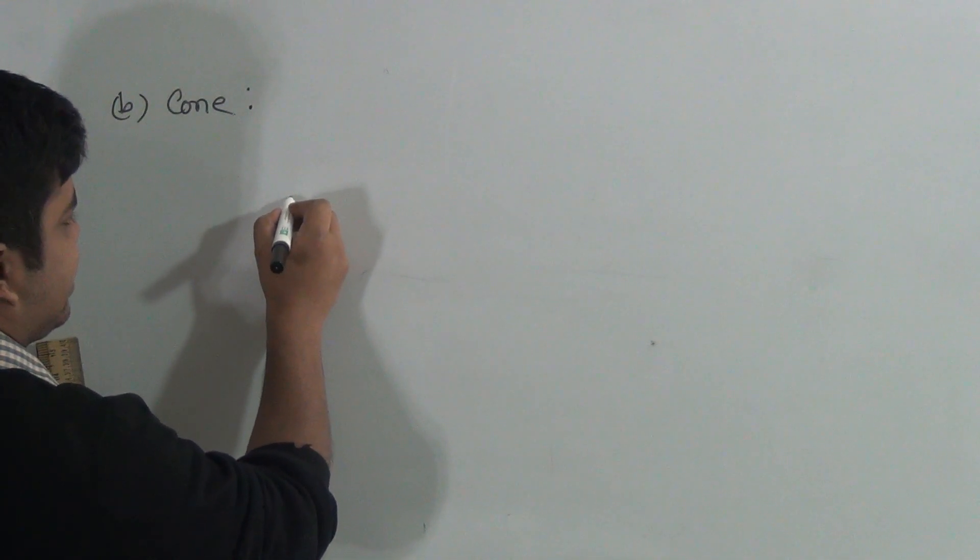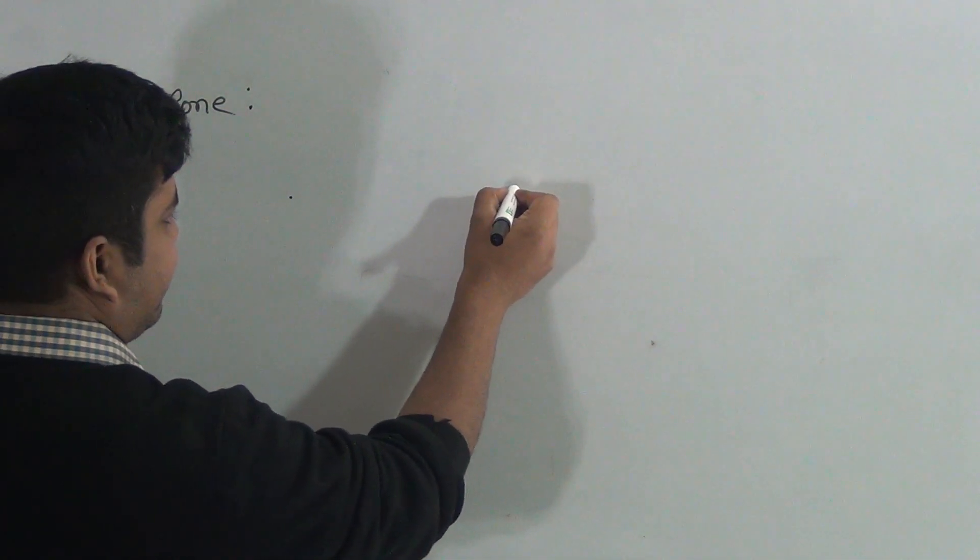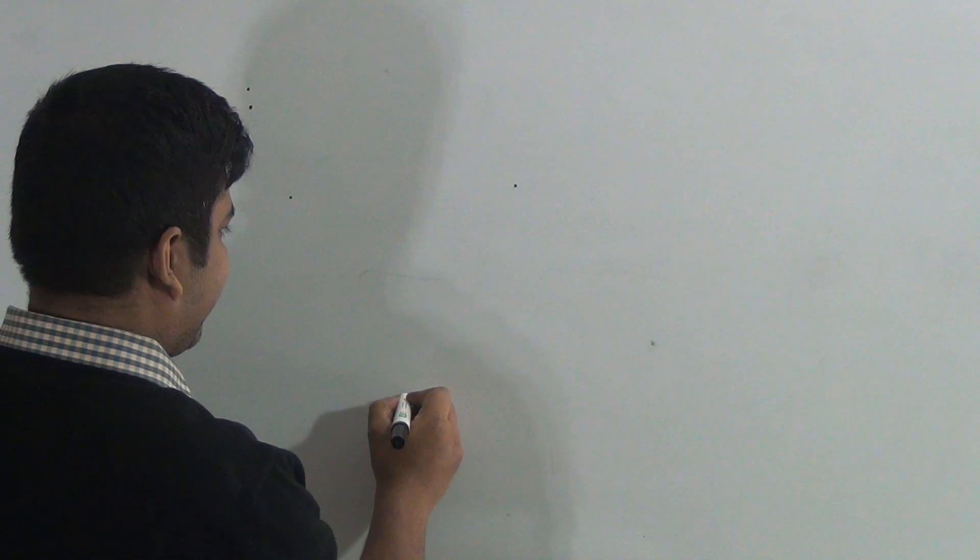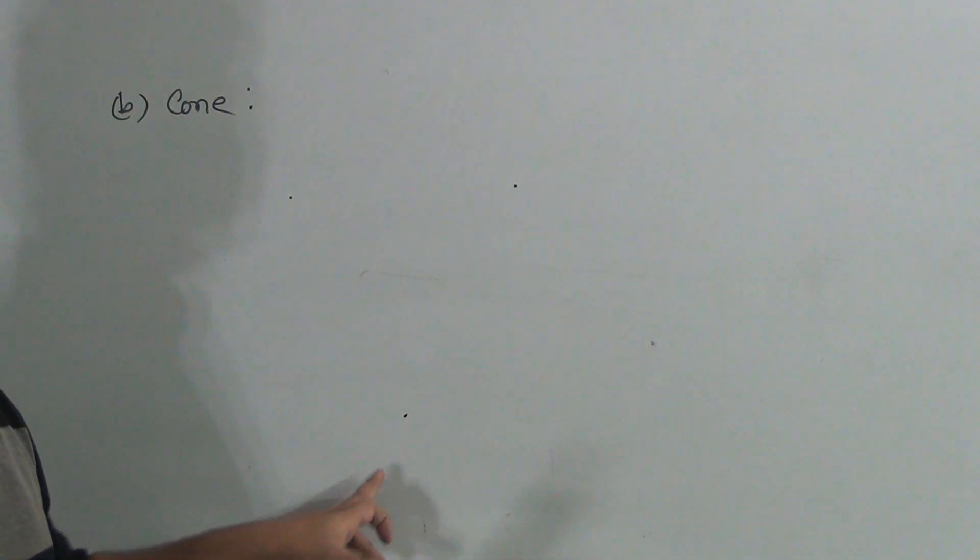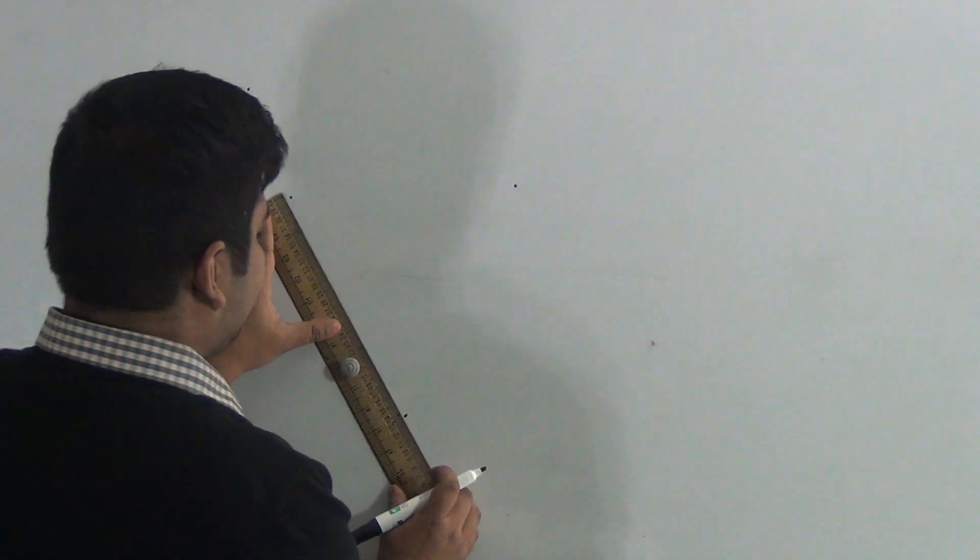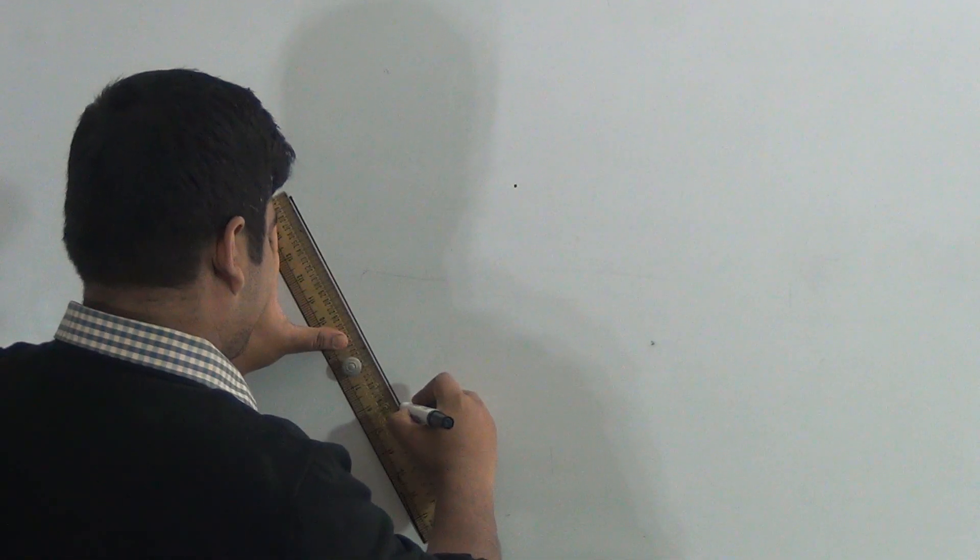My students, at first we take two points in a straight line. Then another point under these two points. So this point, this point, this point. Now I join these two points.